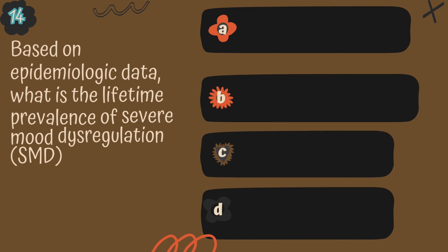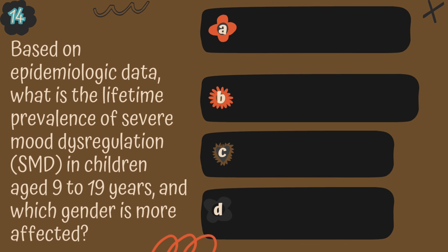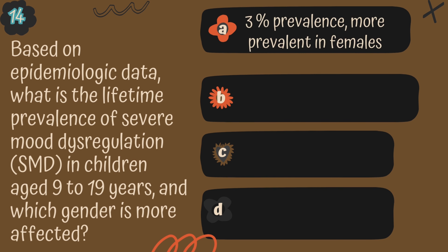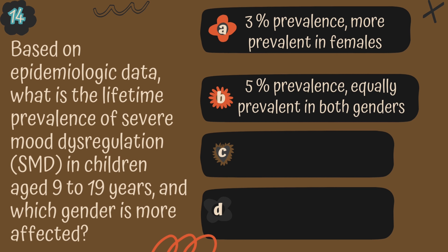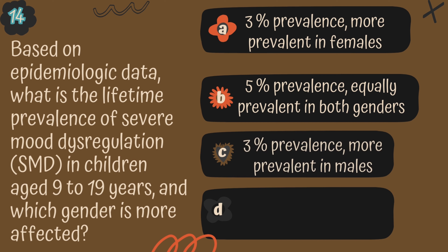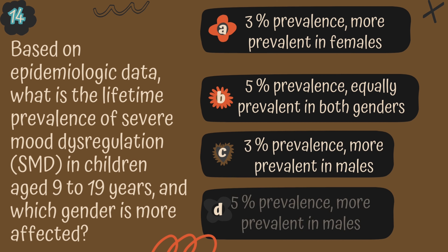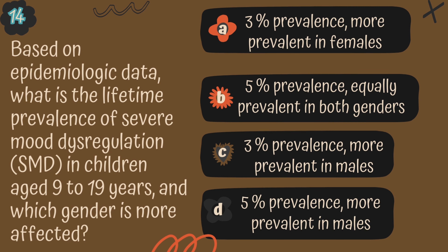Question 14. Based on epidemiological data, what is the lifetime prevalence of severe mood dysregulation (SMD) in children aged 9 to 19 years and which gender is more affected? Is it A. 3% prevalence, more prevalent in females? B. 5% prevalence, equally prevalent in both genders? C. 3% prevalence, more prevalent in males? Or D. 5% prevalence, more prevalent in males?